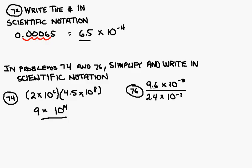Here I have 9.6 divided, so we're basically going to turn this into two fractions. We're going to go 9.6 divided by 2.4, and then over here we have 10 to the minus 3 over 10 to the minus 7.